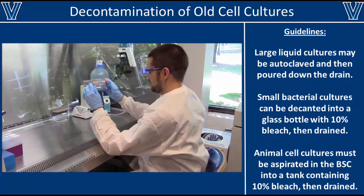Remember it is very important to immediately dispose of any used cell cultures as soon as you're done with them, since used cell culture media can provide breeding grounds for potential contaminants. Large liquid cultures can be autoclaved and poured down the drain. Small bacterial and animal cell cultures can also be autoclaved, but it's usually much easier to sterilize them with 10% bleach — either in the BSC with animal cell cultures, or on the bench with bacterial cell cultures.